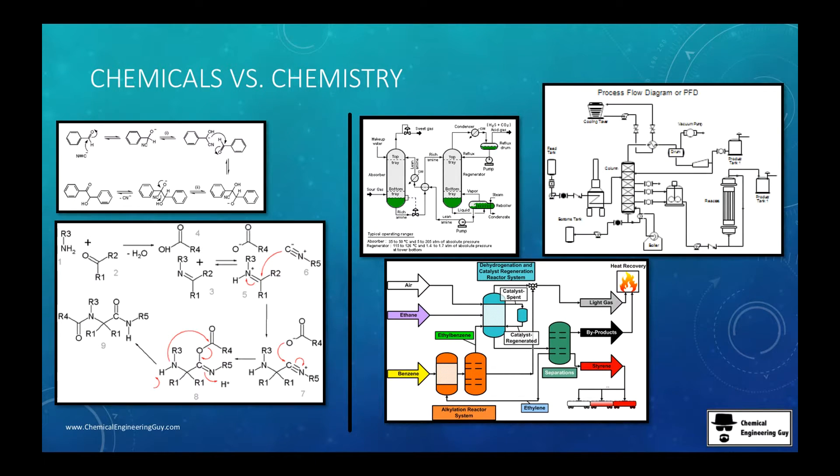Once again, chemists are interested in theory behind how it works, making new materials, and of course you need to know about how they interact between each other. The chemical engineer is more about, I'm interested in this product, how do I get from reactants to product with the cheapest, least time if possible, safely, environmentally friendly and so on.